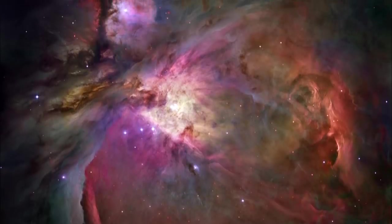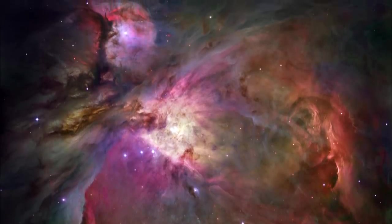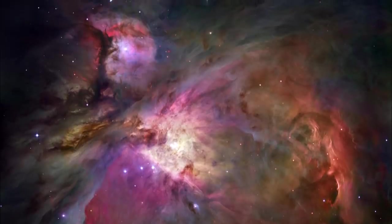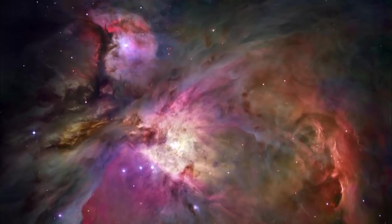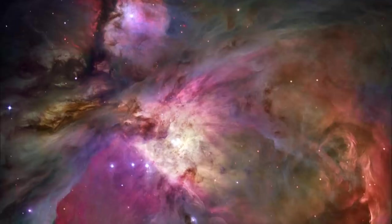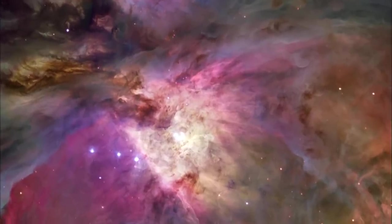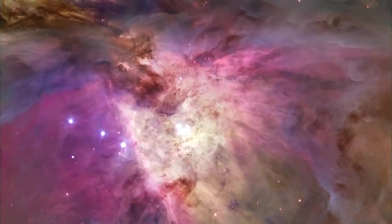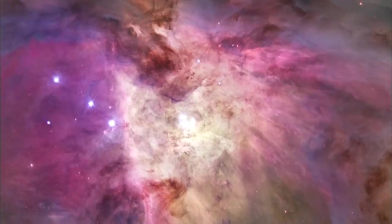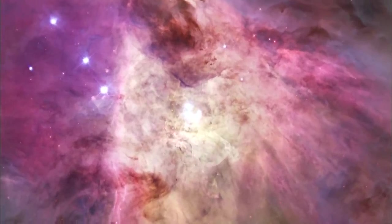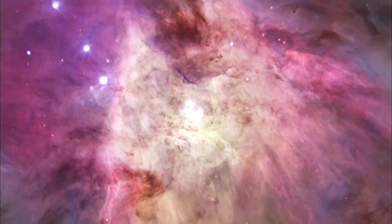At the center is the Trapezium, a cluster of four intensely bright giant stars, 100,000 times more luminous than our own Sun. These stars produce enough ultraviolet radiation to energize the surrounding hydrogen and light up the inner portion of the nebula like a flame inside a lantern.